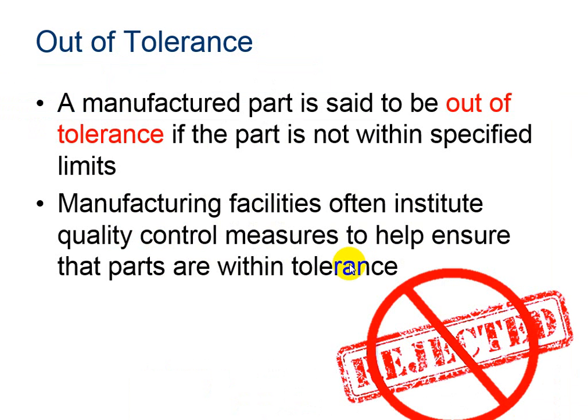A manufactured part is said to be out of tolerance if the part is not within the specified limits. Manufacturing facilities often institute quality control measures to help ensure that parts are within tolerance. Many companies hire people to be quality control specialists and measure parts as they come out to ensure that the parts fall within the tolerances.